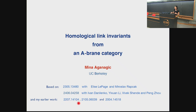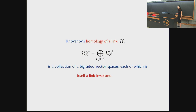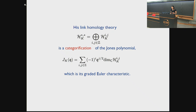This is a review paper from the ICM 2022. The link categorification problem was introduced by Khovanov in '98. Khovanov's link homologies are a collection of bi-graded vector spaces, each of which is a link invariant. His link homology theory is a categorification of the Jones polynomial, which arises as its graded Euler characteristic — a signed count of dimensions.